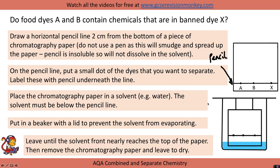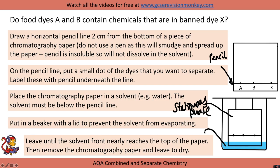Leave until the solvent front nearly reaches the top of the paper, then remove the chromatography paper and leave to dry. The process of separating a substance through chromatography has two stages: the paper itself is called the stationary phase, and when the inks are dissolved in the solvent, that is called the mobile phase.